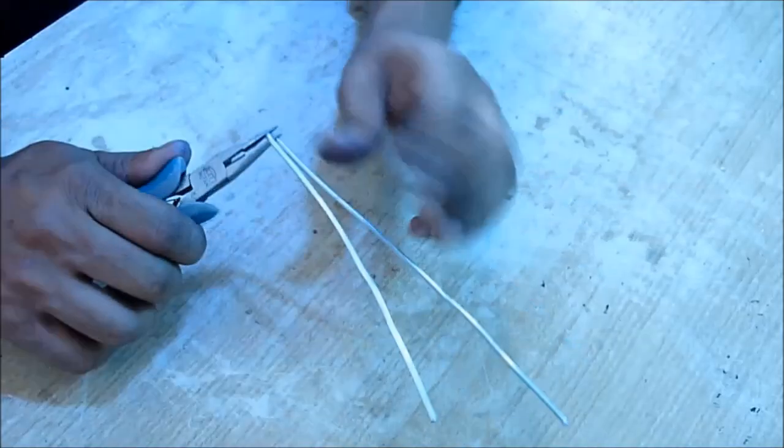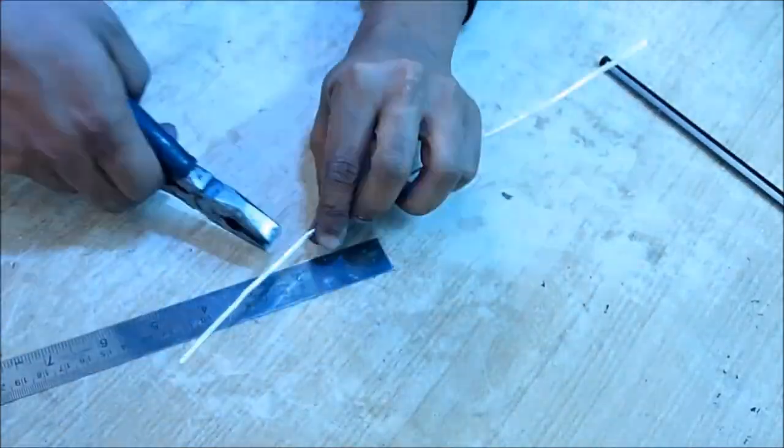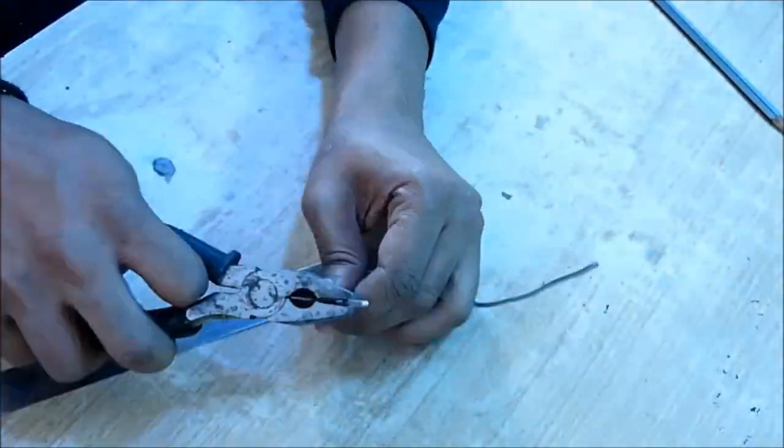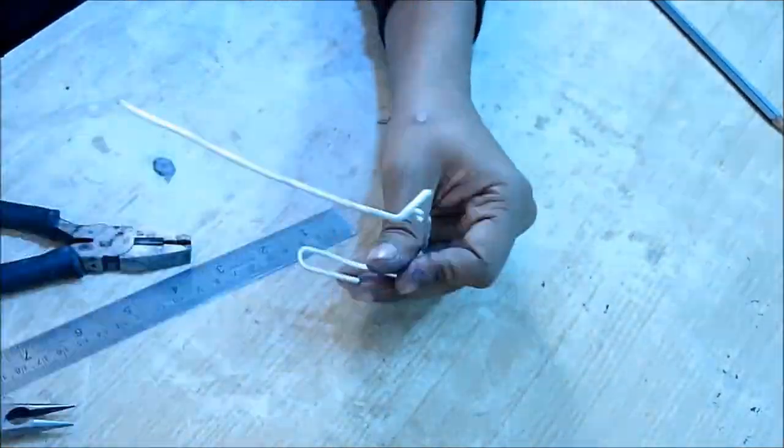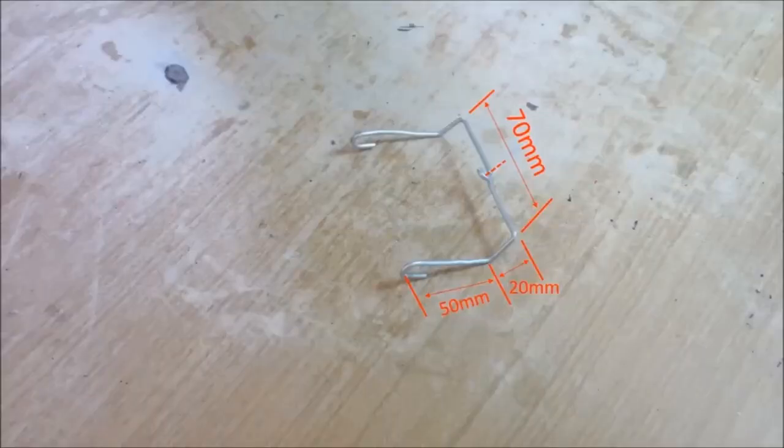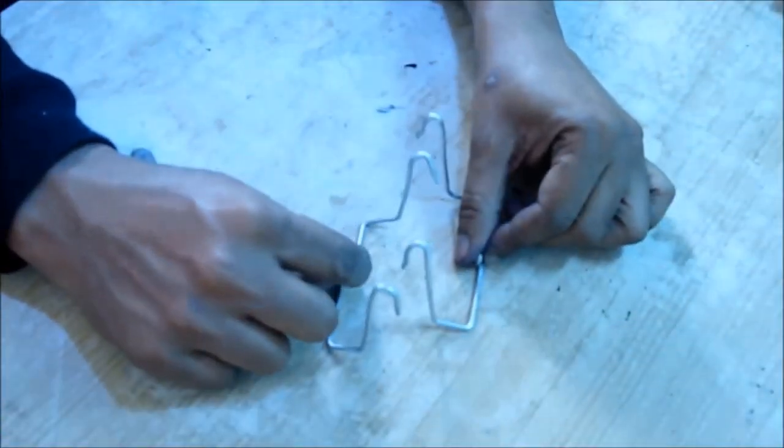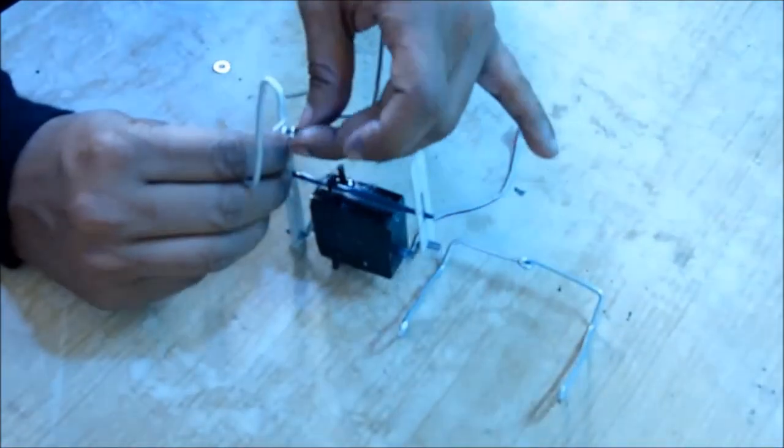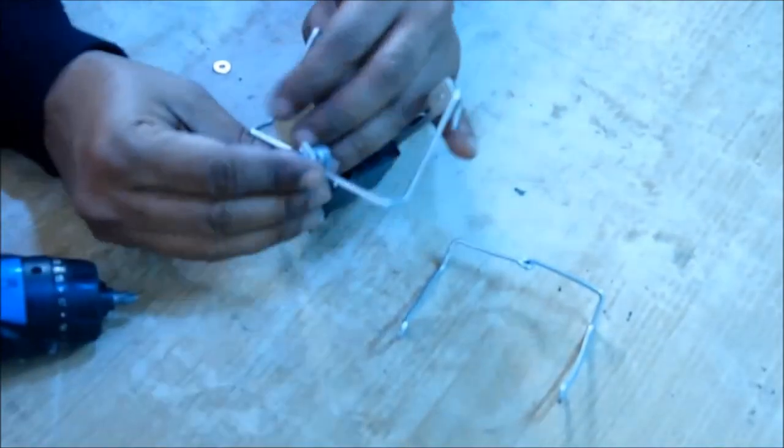Now take some aluminum wire and bend as I am showing in the video. Make the top part of the feet like a hook shape. The dimensions are here. You have to make two such feet and then screw it tightly with the legs.